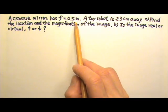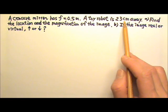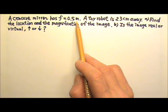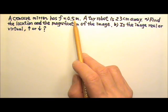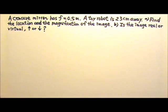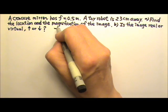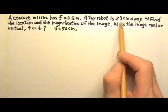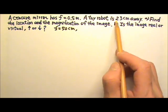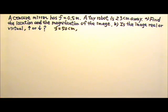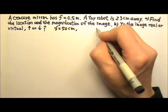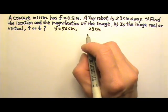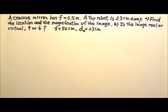We have length in meters and centimeters, so we'll either have to change this to meters or that to centimeters. I'm just going to use centimeters, so I'm going to change the focal length to 50 centimeters. So the focal length is 50 centimeters. The toy robot is 23 cm away. So what do you think 23 cm is? It is the distance between the object, which is the robot, and the mirror. So this is the object distance, dO.